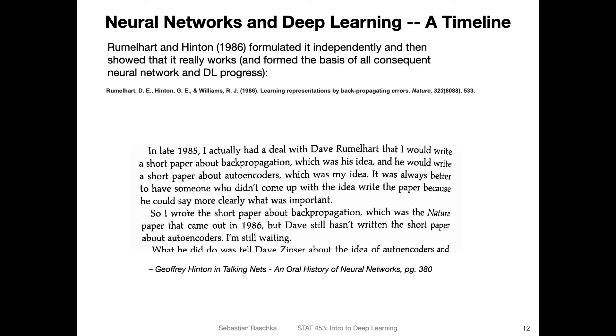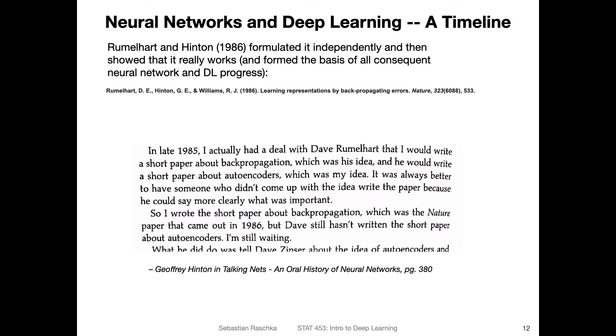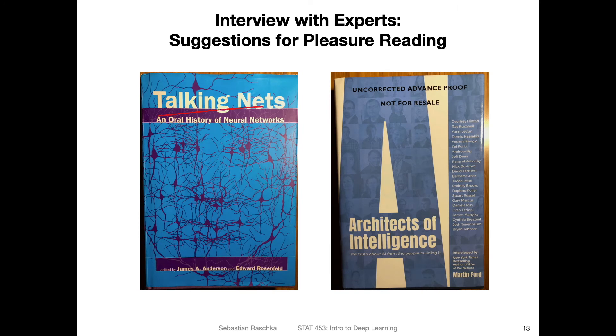And here's a little fun fact about the backpropagation algorithm by Rumelhart and Hinton. So I read this in an interview book, where Geoffrey Hinton talked about how they came up with it. So he said in late 1985, I actually had a deal with Dave Rumelhart, that I would write a short paper about backpropagation, which was his idea, and he would write a short paper about autoencoders, which was my idea, it was always better to have someone who didn't come up with the idea write the paper, because he could say more clearly what was important. So I wrote the short paper about backpropagation, which was the Nature paper that came out in 1986. But Dave still hasn't written the short paper about autoencoders, I'm still waiting.